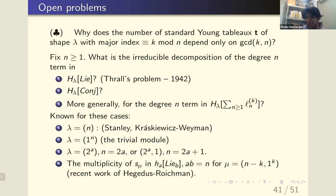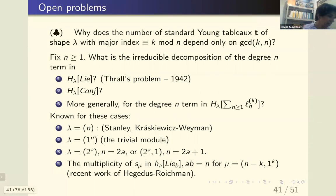Here's my list of open problems. The combinatorial open problem is: why does the number of standard Young tableaux of a particular shape with index congruent to k mod n depend only on the GCD of k and n? The GCD of k and n is what determines the representation when you take the k-th power of a primitive root of unity and induce it up to S_n. Nobody knows why that works.